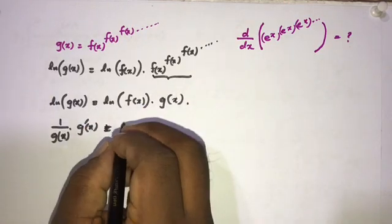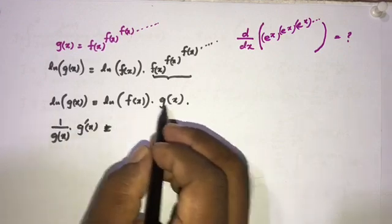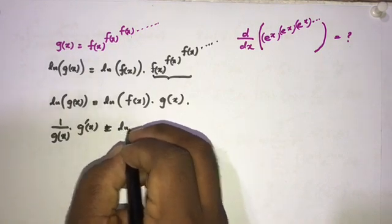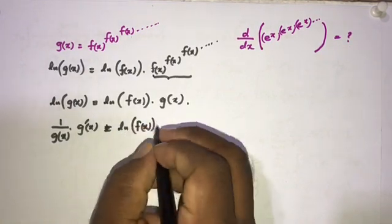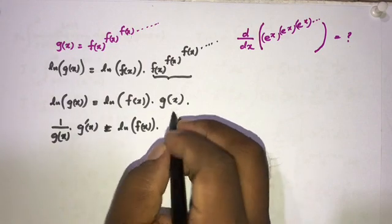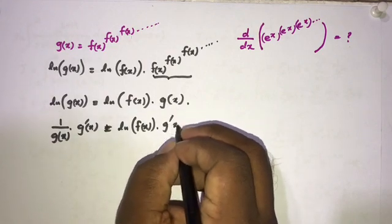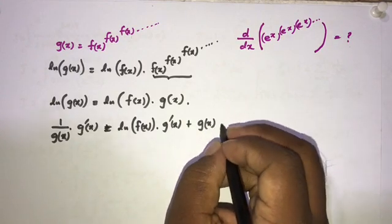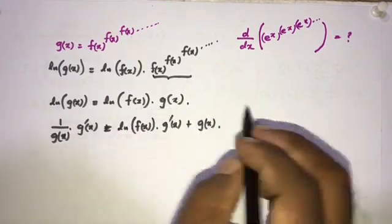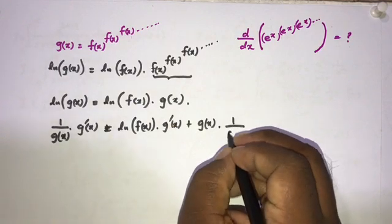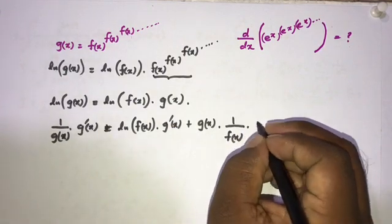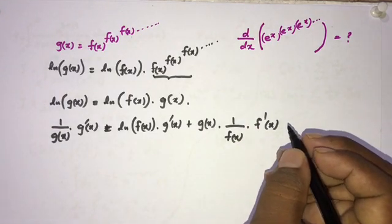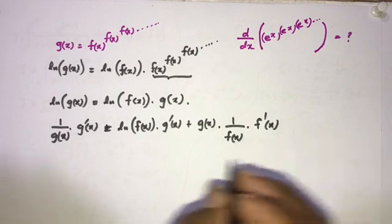On the right-hand side, applying the product rule: the first term is g of x times the derivative of ln(f(x)), and the second term is ln(f(x)) times g'(x). The derivative of ln(f(x)) gives us one over f of x times f'(x).